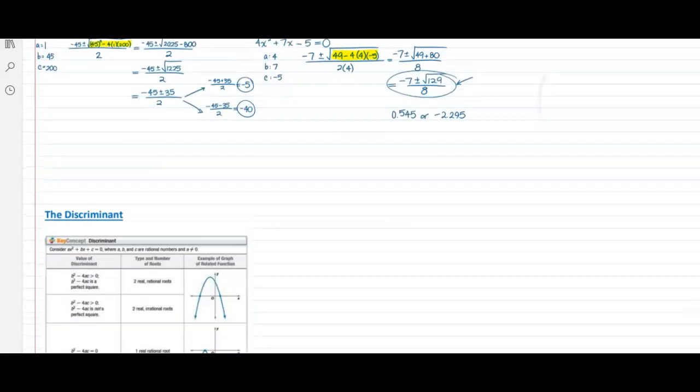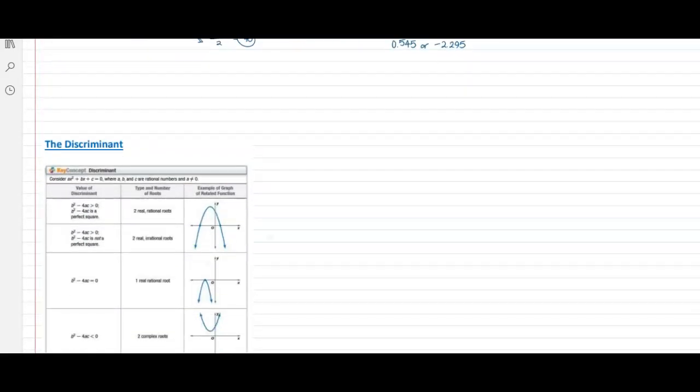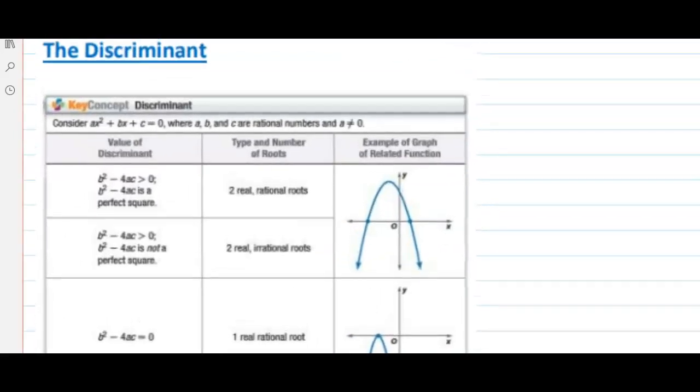This is the discriminant of the quadratic formula. It is literally b squared minus 4 times ac. That is our discriminant.